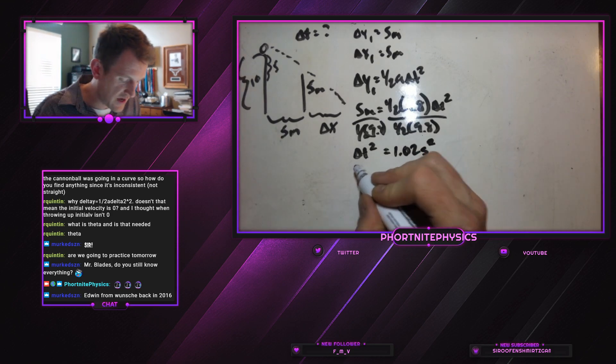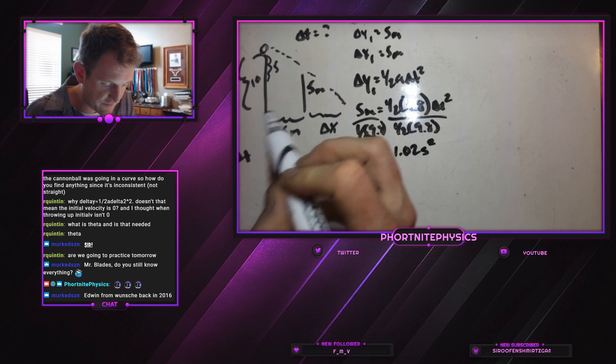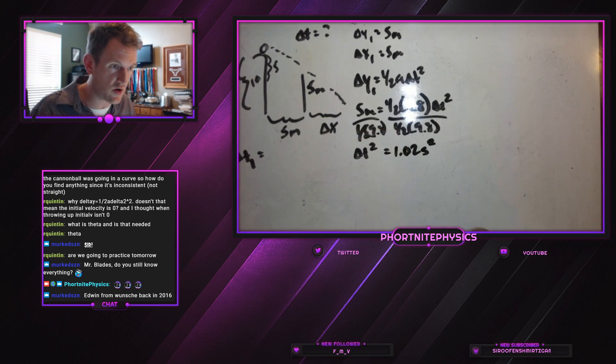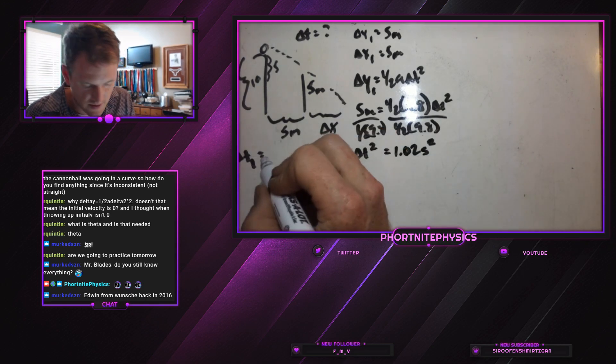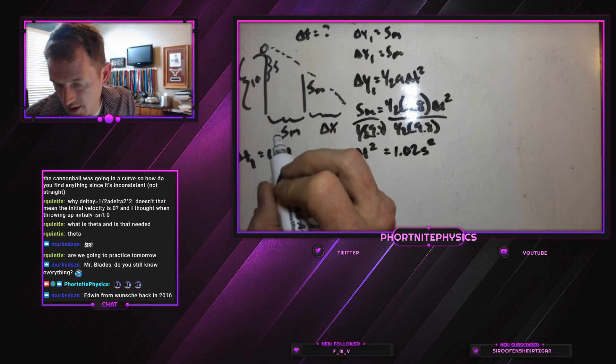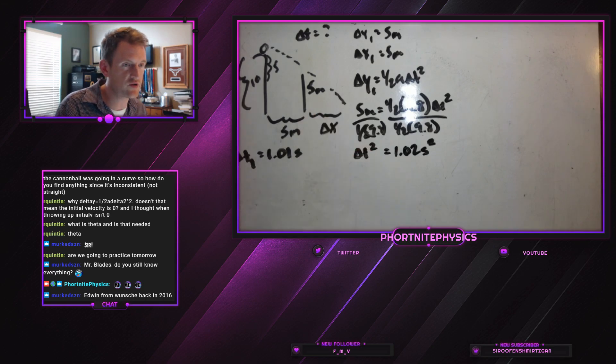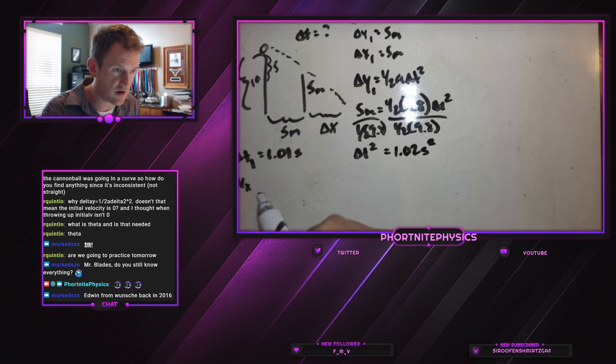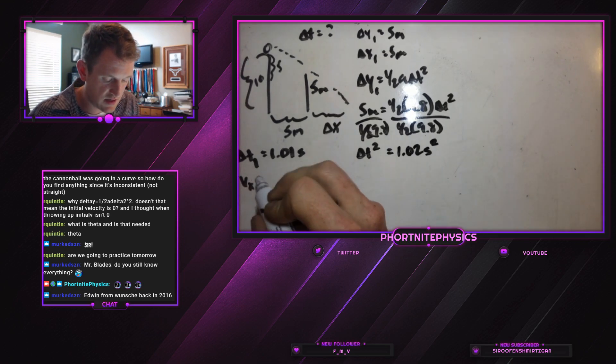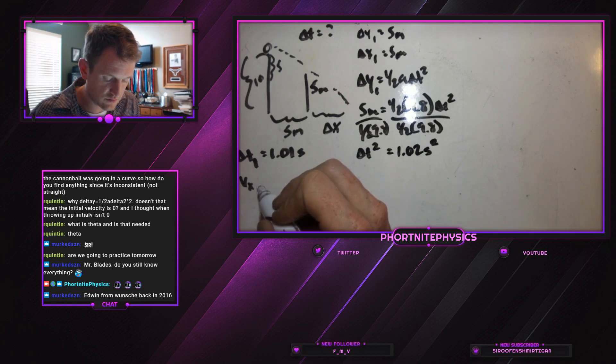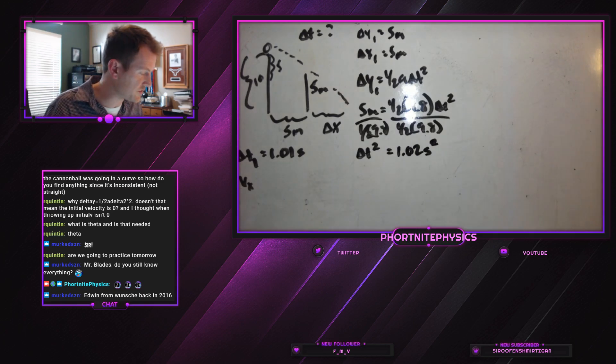And if we square root both sides, we have a time to the first stick. So time 1 is equal to 1.01 seconds. That's how long it took for it to travel 5 meters. And so we can know our VX, our velocity in the X direction.